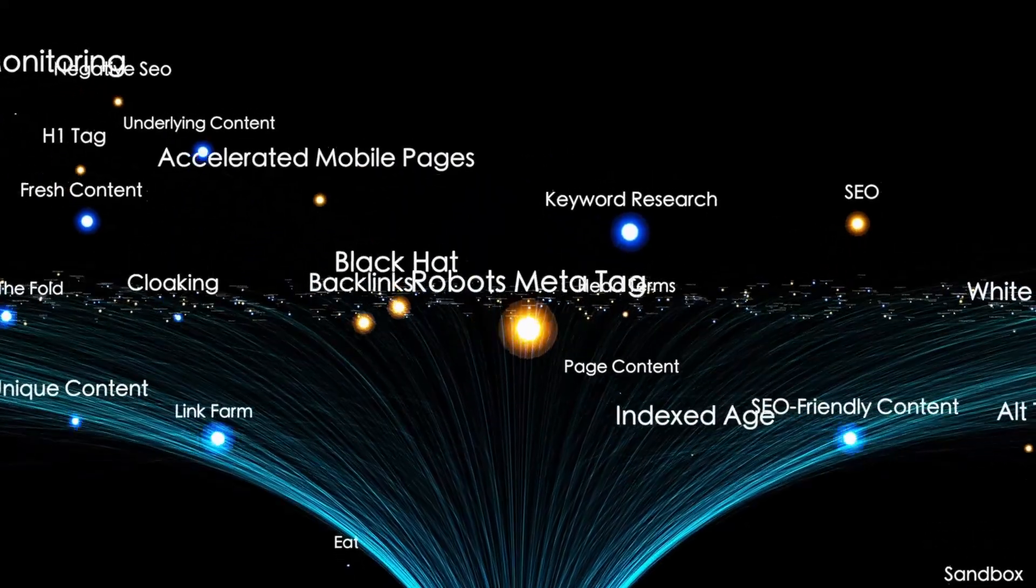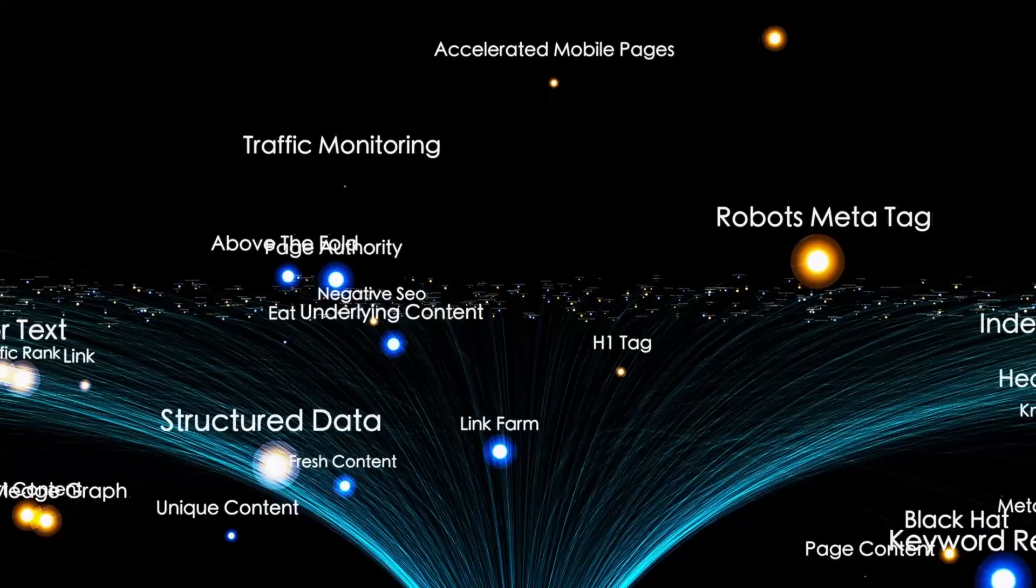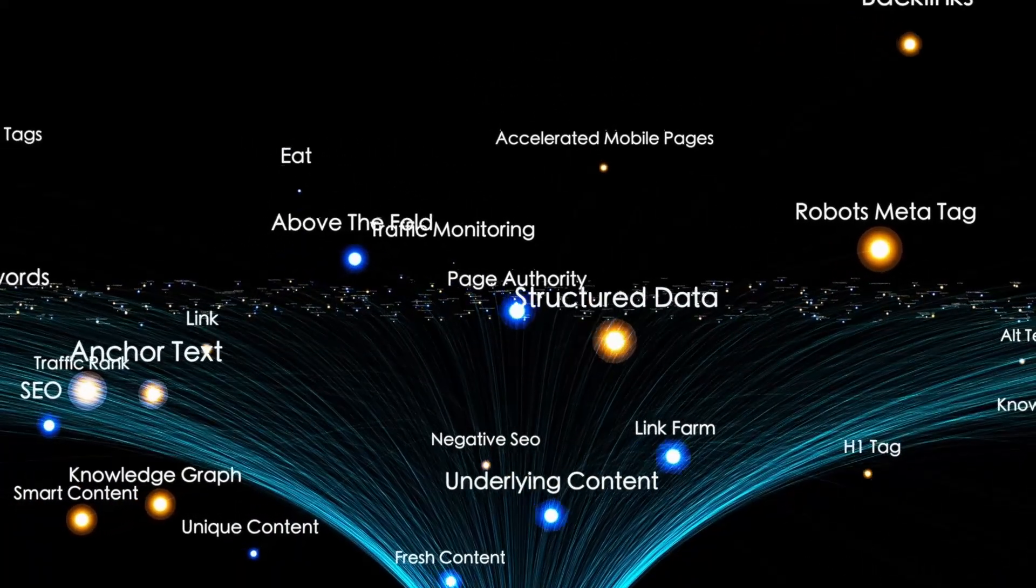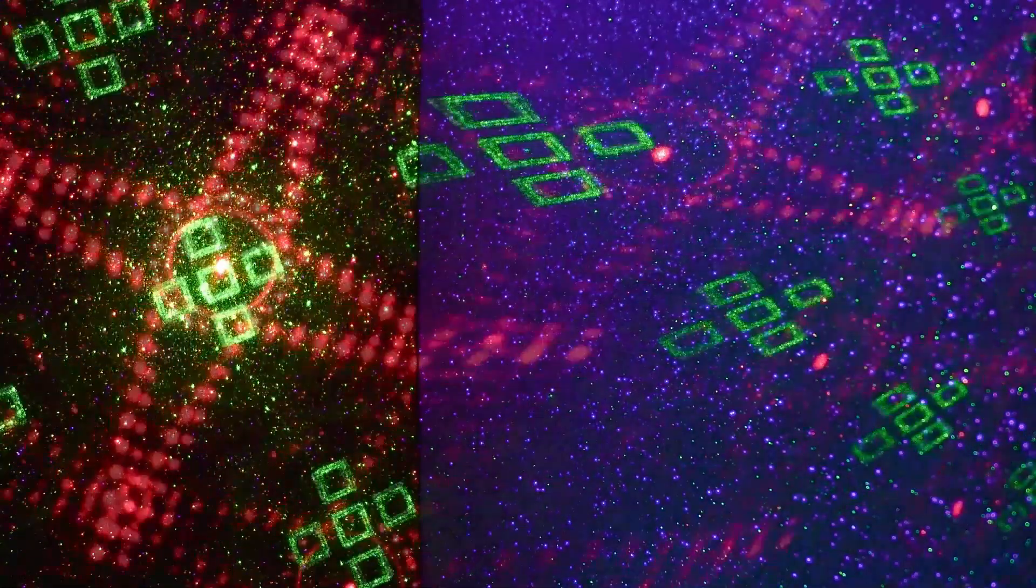Yet there's also hope. If these probes exist and haven't interfered, it suggests a neutral or benevolent presence. Maybe they're just recording. Maybe they're waiting for us to grow up enough to notice them. The discovery would ignite a new space race—a scramble to reach the Trojans, to touch, to understand, to speak.